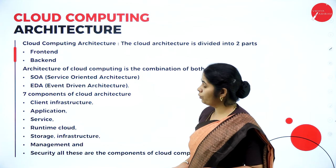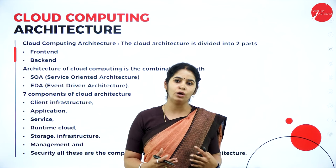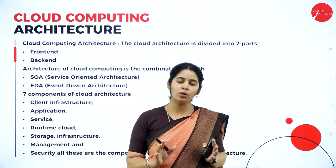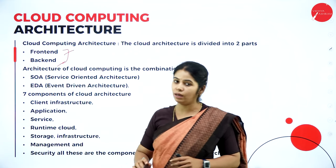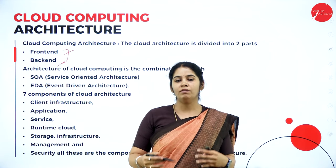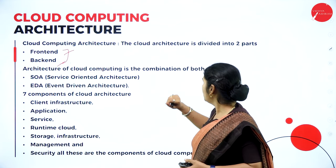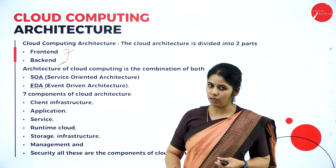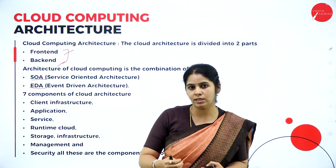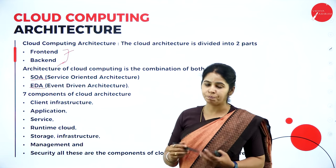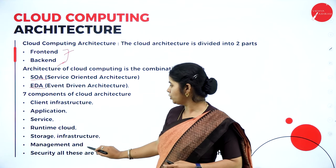Cloud computing architecture — cloud is not a physical existence, so we don't have any physical architecture; it is an assumption of how it works. Cloud computing architecture has two parts: front end and back end. The front end is the cloud service user, and what the provider is doing at the back is the back end. The architecture of cloud computing is a combination of both service-oriented architecture and event-driven architecture. Service-oriented means whenever we need the service, we can access it; whenever we are doing a particular event or solving a problem, we can access the resources. The seven components of cloud architecture are: client infrastructure, application, service, runtime, cloud, storage infrastructure, management, and security.